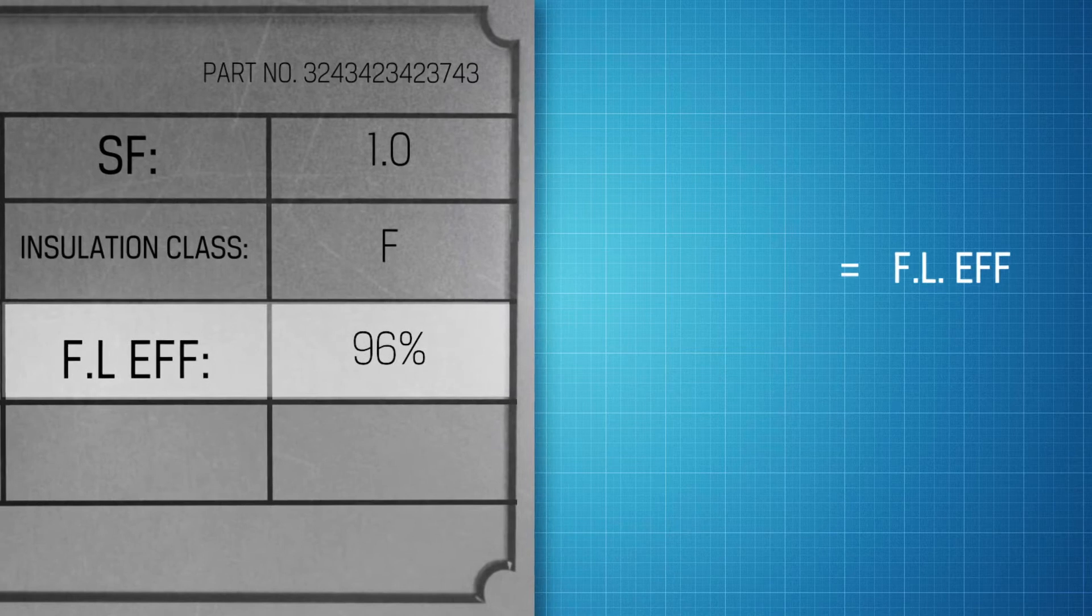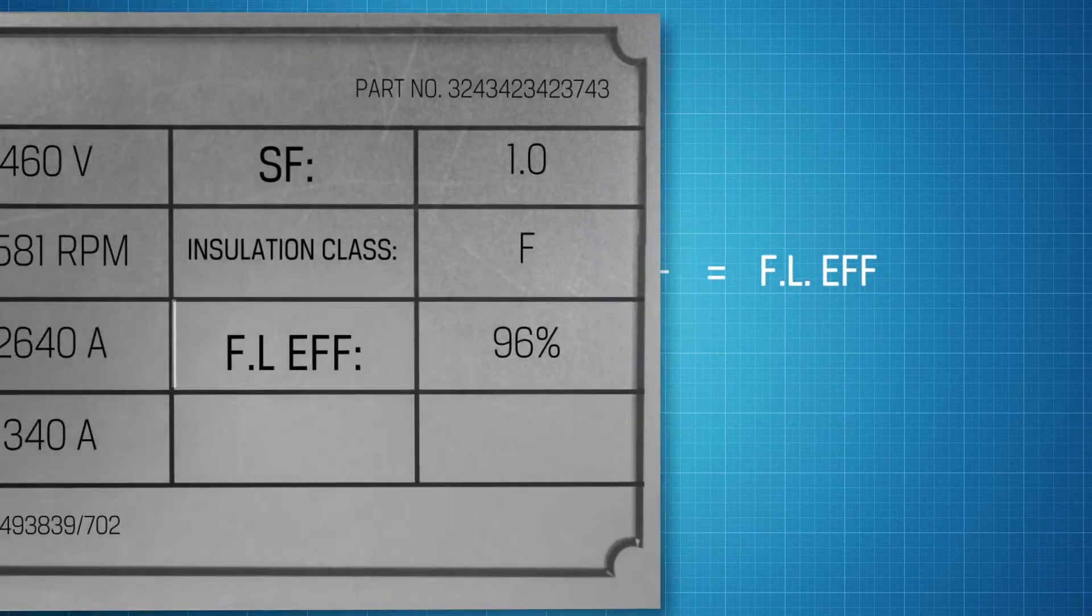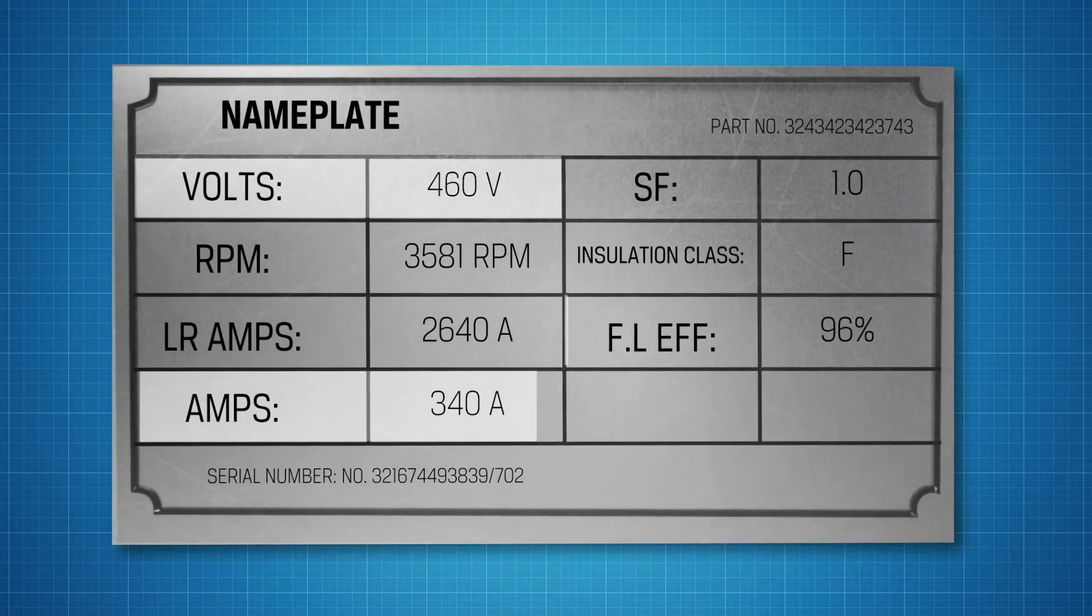Full load efficiency reflects the power output divided by the power input at full load. Knowing volts, amps, and efficiency, you can estimate motor energy consumption.